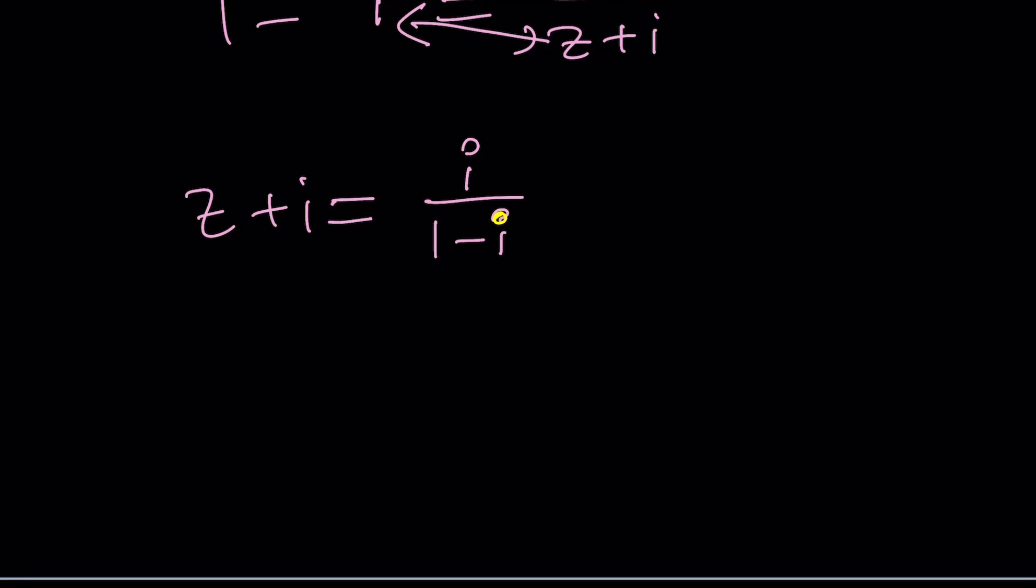So now we're almost there. What we need to do is subtract I from both sides. We can do that, or we can take care of the right-hand side first, make it a little better, and then subtract I. I'll do the latter. So I'm going to go ahead and multiply by one plus I first to realize the denominator. I just want to make the denominator real.